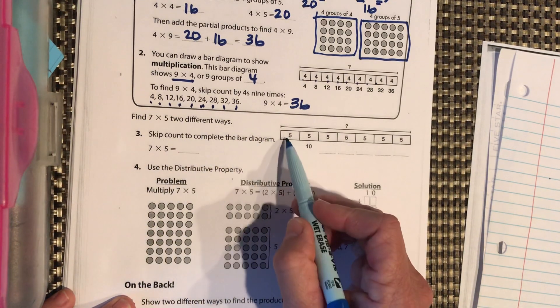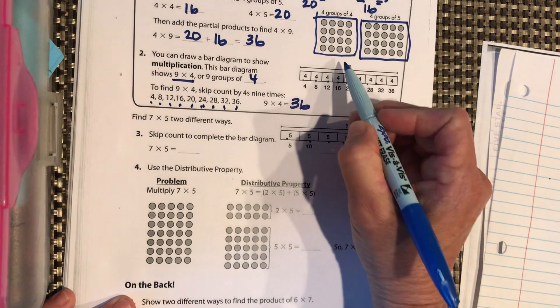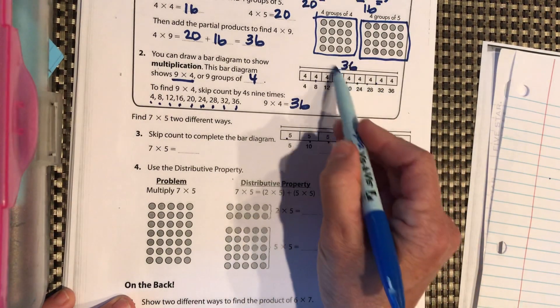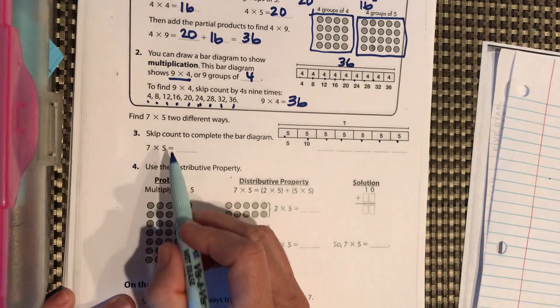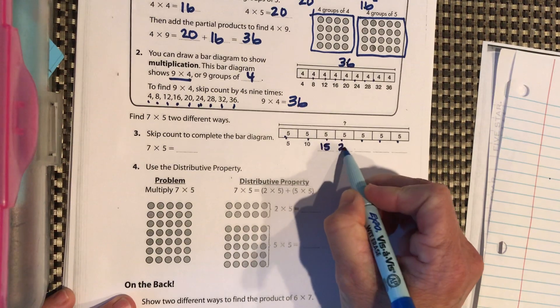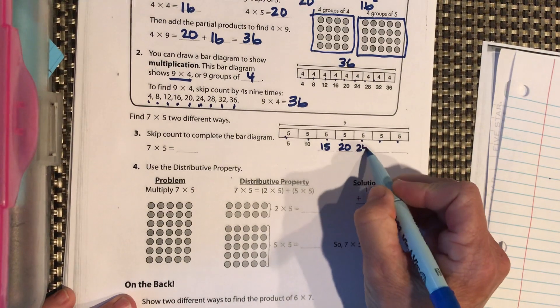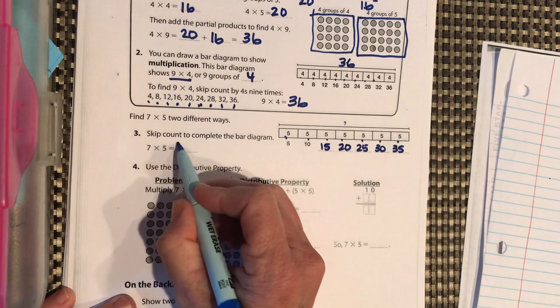Okay, so here's a bar diagram. We have 7 groups of 5. And we're going to put our, oops, I forgot to put my big answer up here. Always the largest number goes on the top of the bar diagram since that's the top of the mountain there. Okay, skip count by 5. 5, 10, 15, 20. You pause it and finish that. 25, 30, 35. So 7 times 5 is 35.